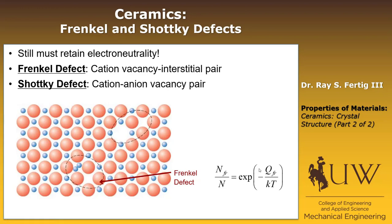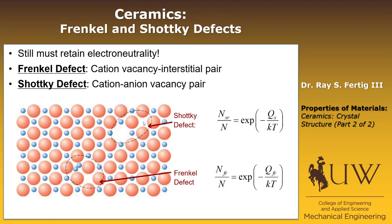The next type of defect is called a Schottky defect. It's formed such that it retains electroneutrality — it's a cation–anion vacancy pair. We remove an anion (removing negative charge) and also remove a cation (removing positive charge), so electroneutrality is retained. The equilibrium concentration has the exact same form as vacancies and Frenkel defects: it's simply e to the negative Schottky formation energy over kT.